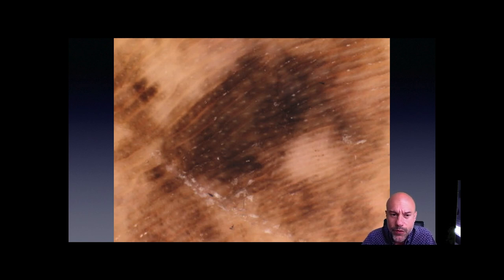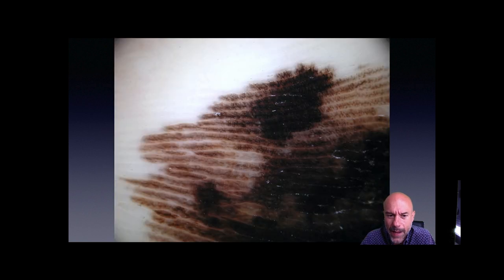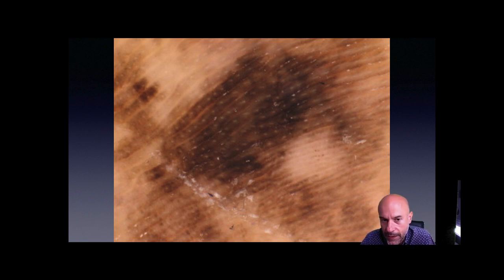Concerning the parallel ridge pattern, it is usually easy to recognize because the pigmentation is located on the ridge — the brown lines are much thicker than the non-pigmented ones. We can also see the openings of the eccrine ducts, which are always located on the ridge, and they help us locate the ridge.